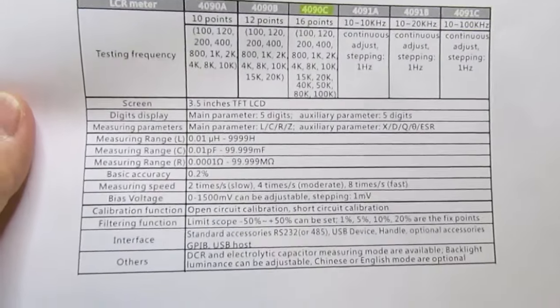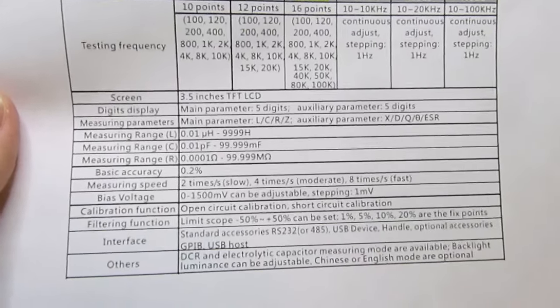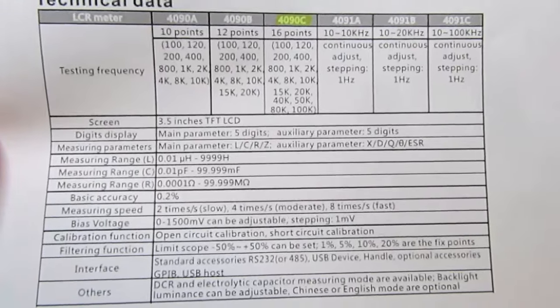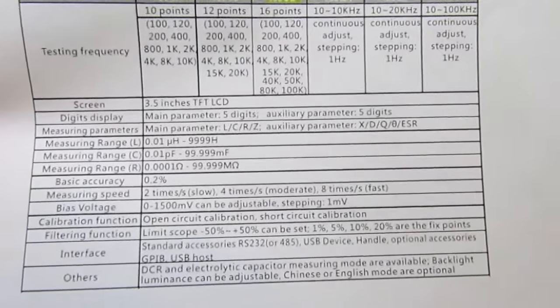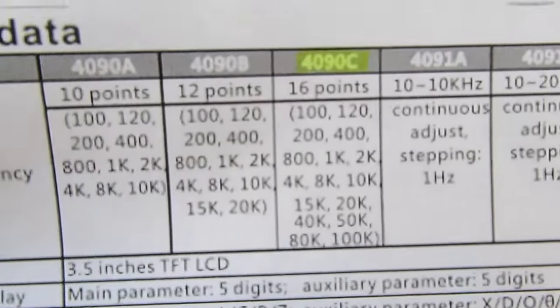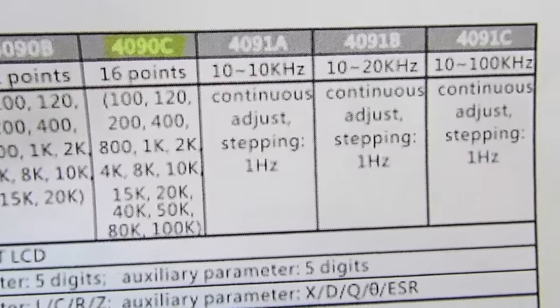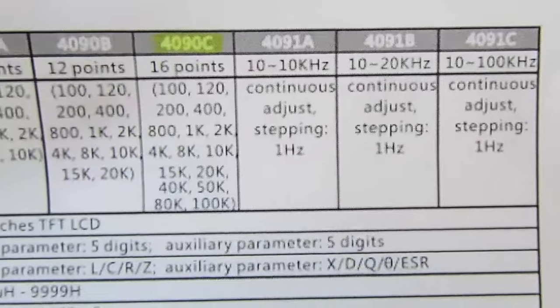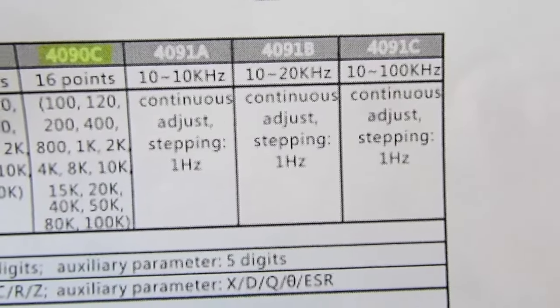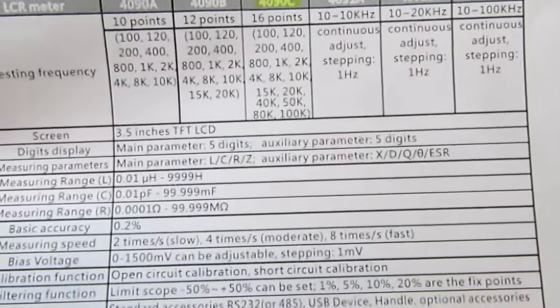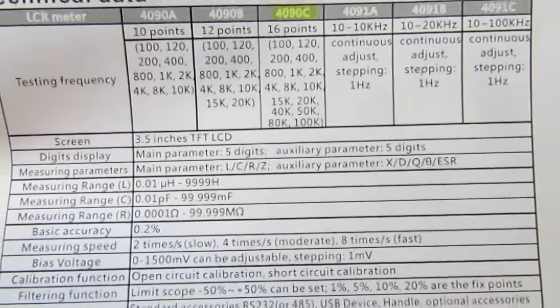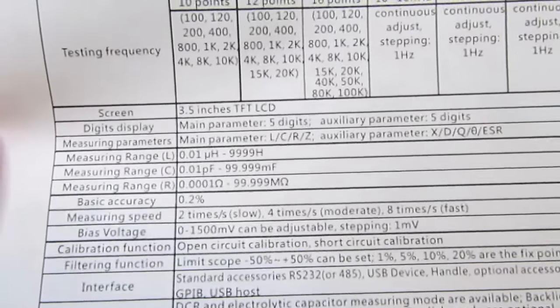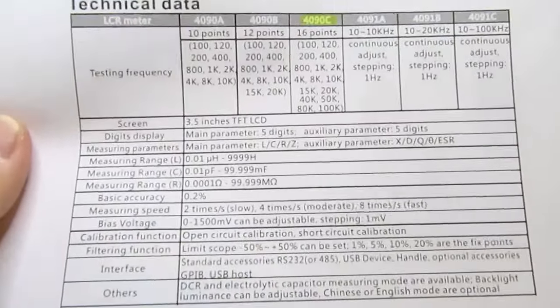This is a chart that the seller of this product provided me. Because on Amazon, which is where I bought it, it had five different options. The 4090A, the B, the C, the 4091C for sure, and either the A or the B. They have the same description for every one of them, so it was hard to tell what the difference was. So I went through Amazon and they got a hold of somebody at the seller who sent me this.